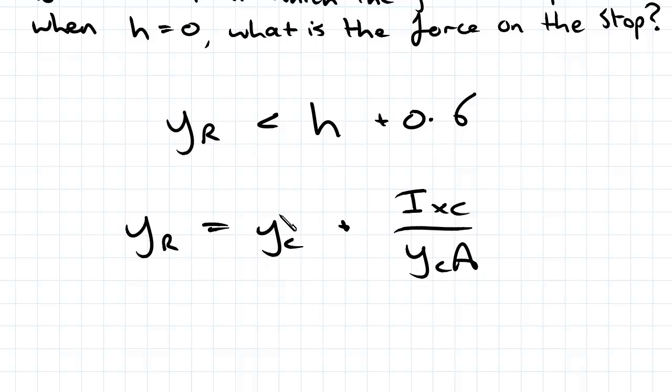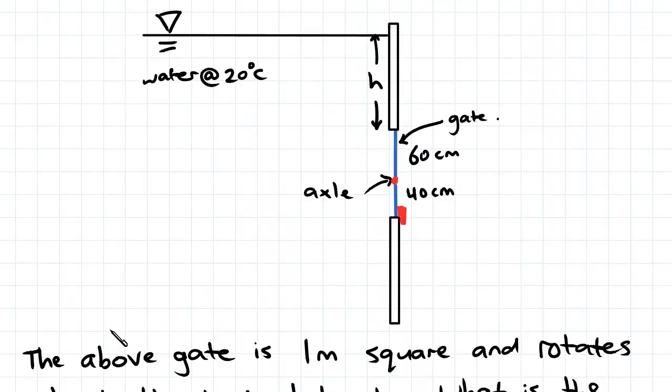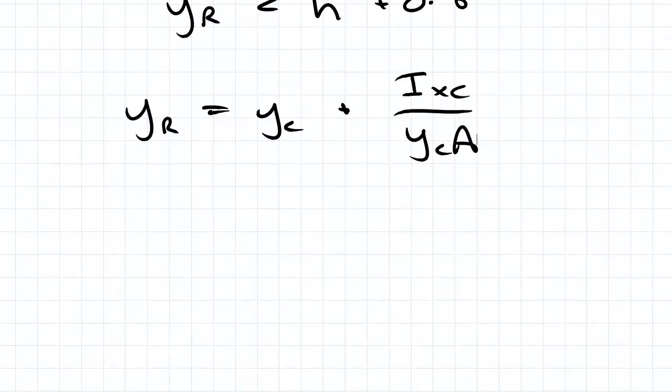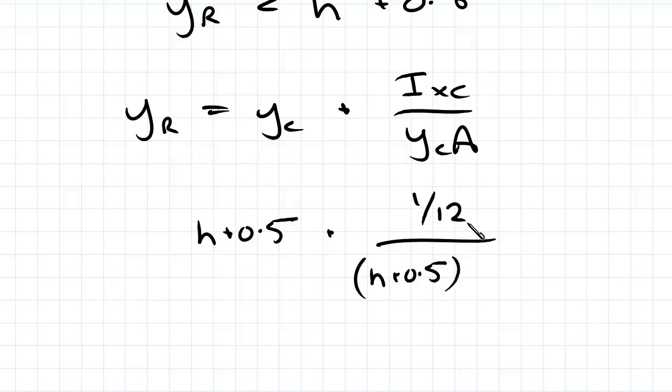YC is the centroid of the shape we're considering. So the shape we're considering is a square 1 meter by 1 meter. So it'll be H plus 0.5 will be the YC. We need to find our IXC and our A. So our IXC is BH cubed on 12 for a rectangle. So that will be 1 times 1 because the base and the height are 1, so we'll be left with 1 on 12 for IXC and the area will be 1 meter squared. So that's our value for YR.